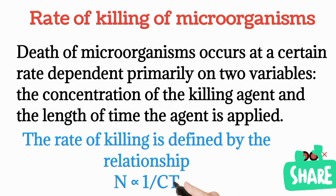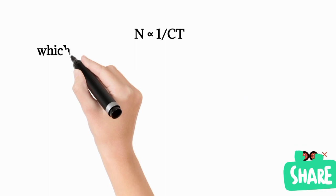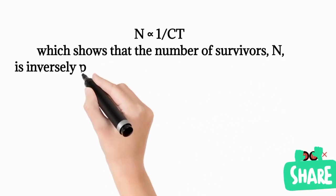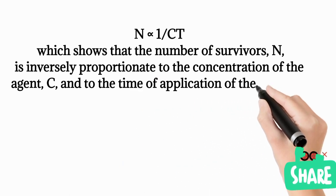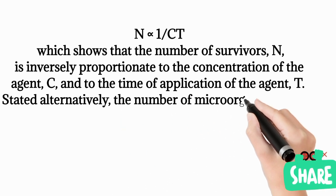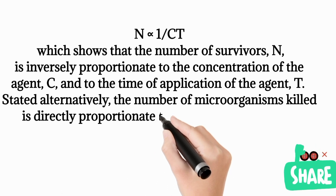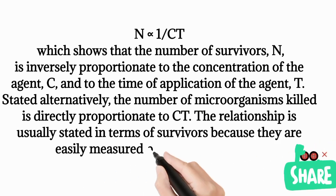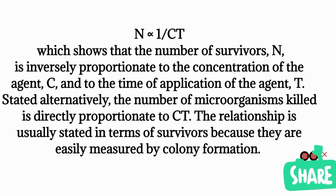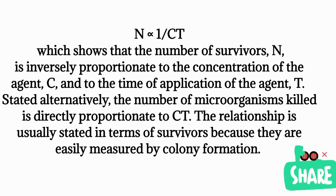We use the number of surviving bacteria because they are easily measured. Alternatively, we can say the number of organisms killed are directly proportional to the concentration of the chemical agent and the length of time of exposure — using a greater quantity of chemical or increasing the time of exposure means more bacteria will be killed.